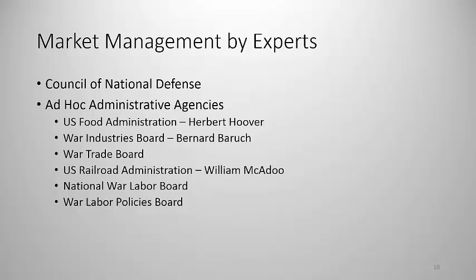The War Trade Board controlled imports and exports and waged economic warfare on Germany. The U.S. Railroad Administration, under Secretary of the Treasury and Wilson's son-in-law William McAdoo, was charged with unsnarling massive rail tie-ups in the Northeast, and in December 1917 federalized — that is, took over — all the rail lines in the U.S. It took until late 1918 to unsnarl all the traffic. The War Finance Board was created in 1918 to mobilize capital. Labor had a voice through the National War Labor Board, which allowed collective bargaining, and the War Labor Policies Board, which coordinated benefits such as the eight-hour day, time-and-a-half for overtime, and many things we take for granted today.